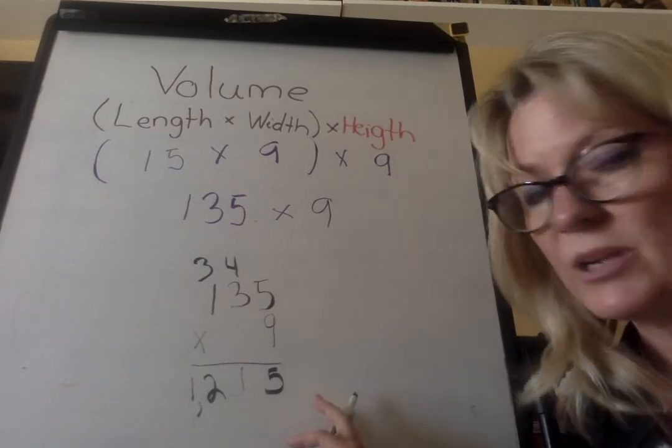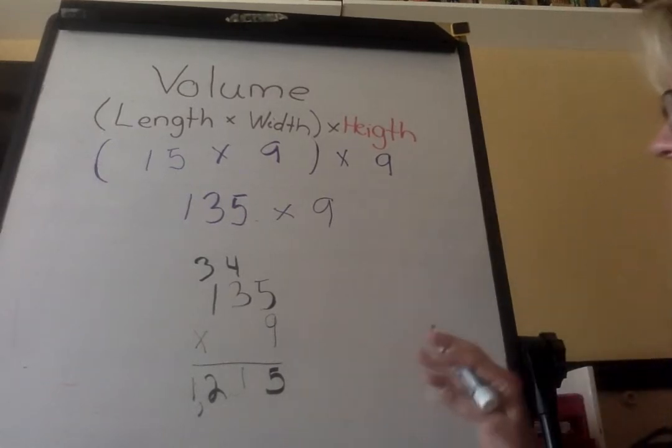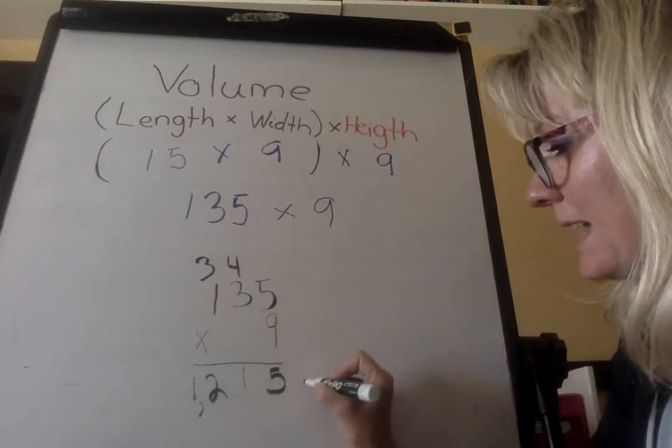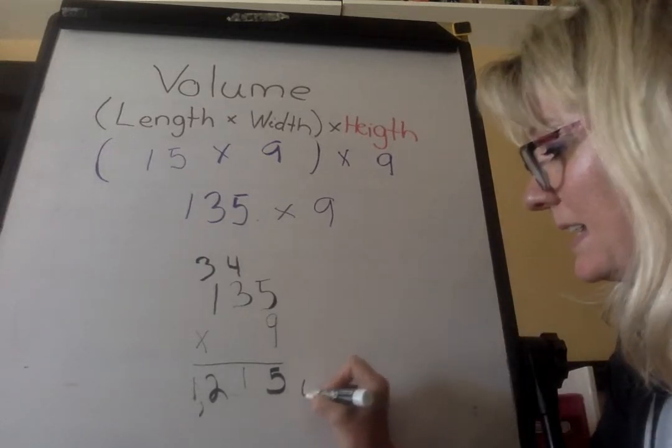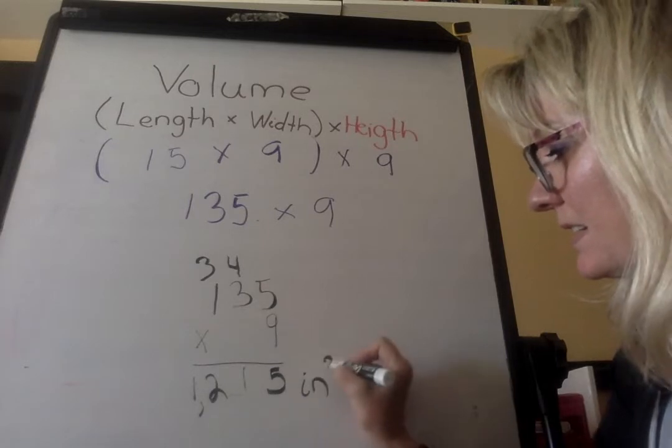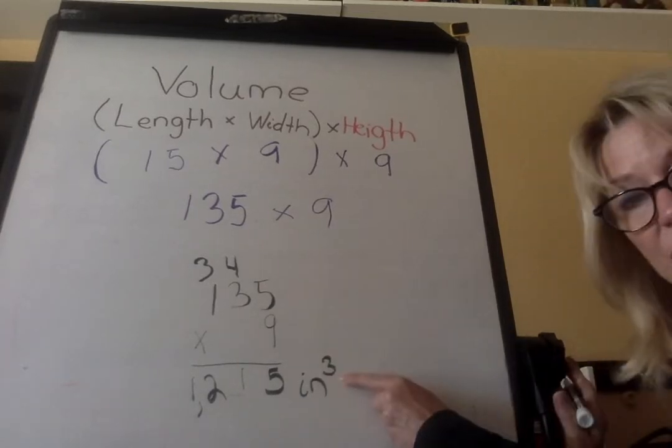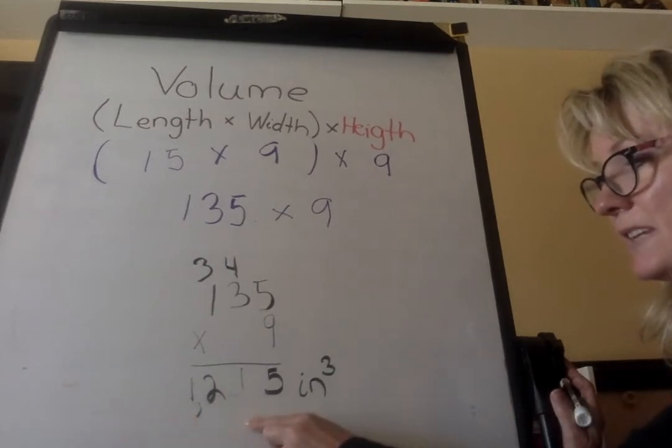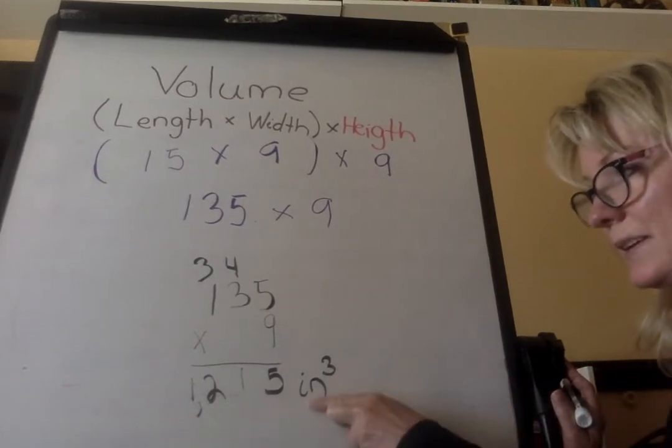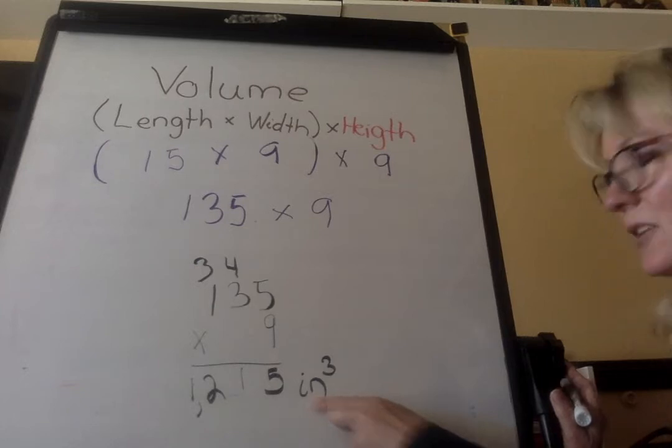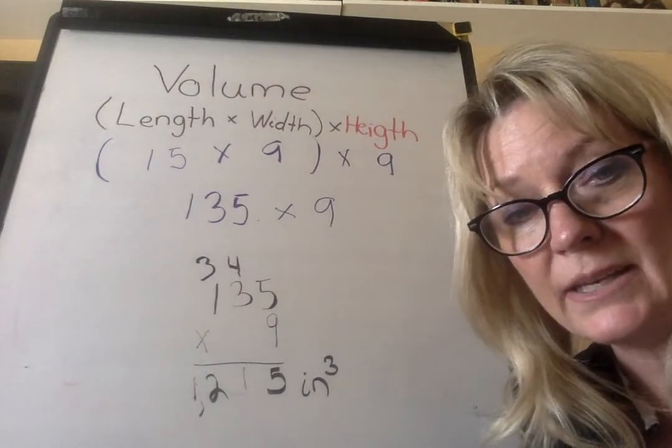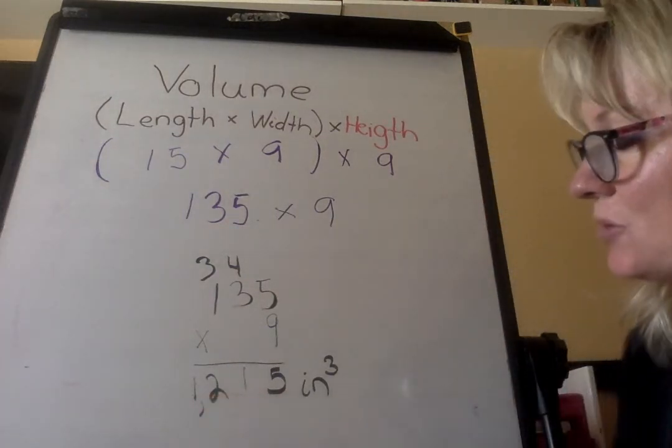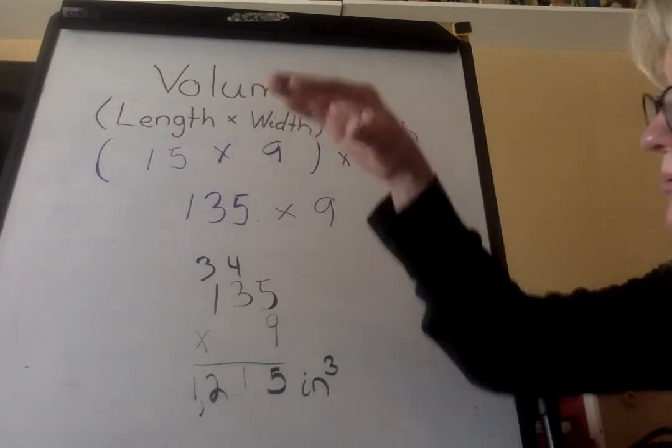So the volume is 1215, but because this is a three-dimensional shape, I'm going to write it as inches cubed with a three, a three-dimensional shape. So it's 1,215 cubic inches. So it would take me, if I had one cubic inch blocks to put in there, it would take me 1,215 of them to totally fill that box. That's what volume is.